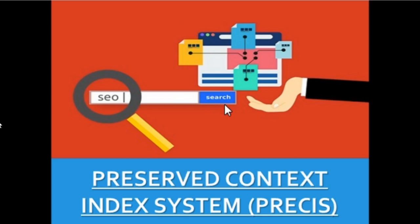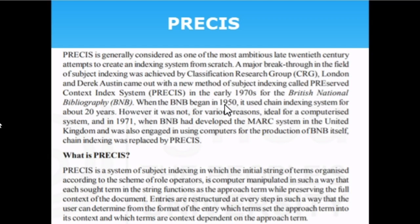PRECIS is generally considered as one of the most ambitious late 20th century attempts to create an indexing system from scratch. Based on the evolution of computers, the British National Bibliography shifted from manual to computerized bibliographical systems. As a result, chain indexing was replaced in the year 1950 by PRECIS.